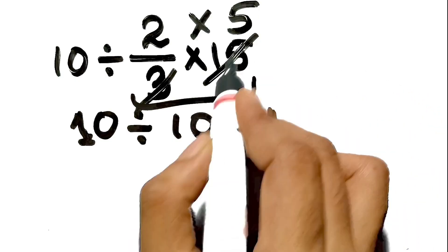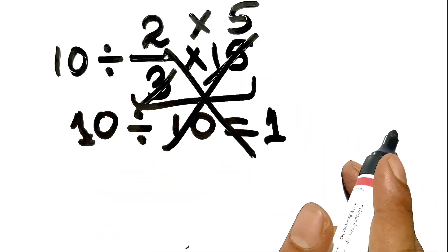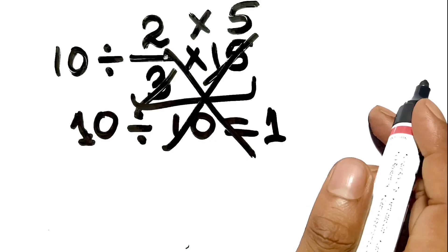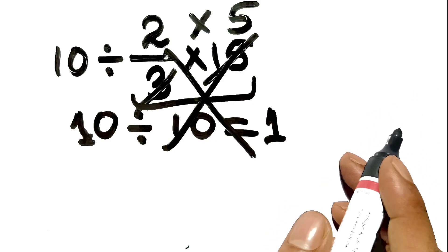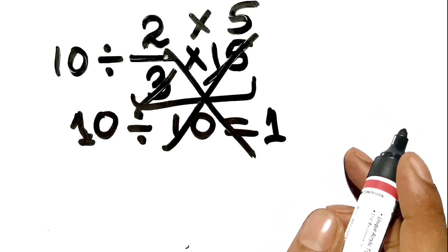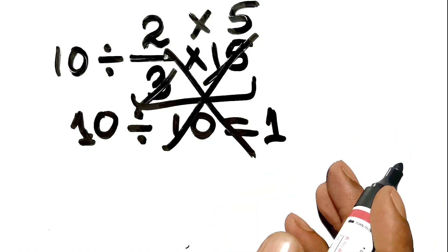But this answer is not correct, because according to the order of operations, we cannot simply cancel numbers across an expression just because they look compatible. There is a strict sequence we must follow.